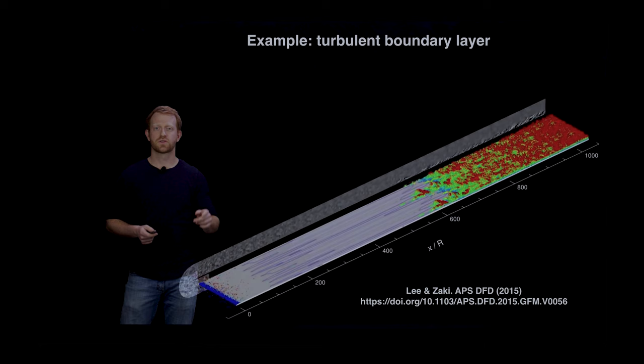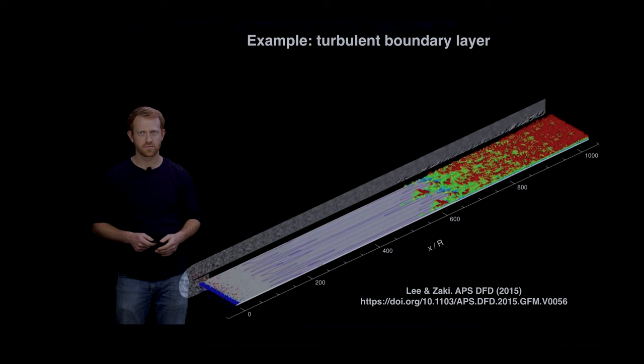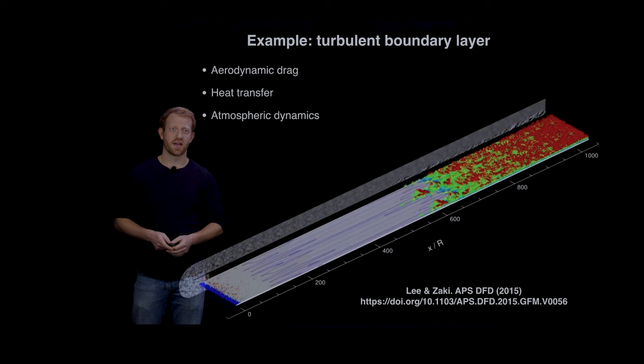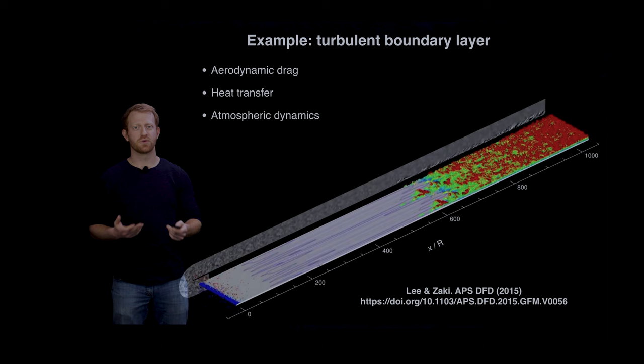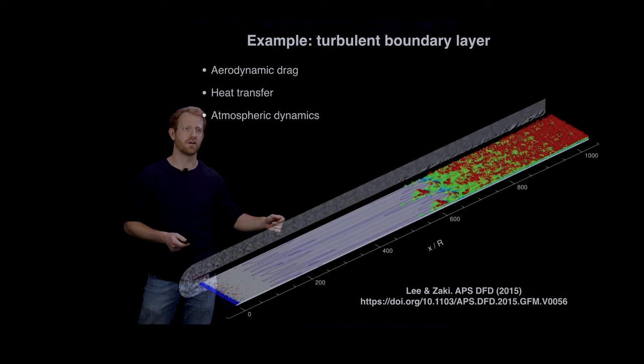A boundary layer is a region of a flow near a wall where shear stresses lead to sharp velocity gradients and things like viscosity become much more important. Understanding boundary layer theory turns out to be very important in a wide range of applications including skin friction drag on airplane wings and heat transfer in atmospheric reentry vehicles.